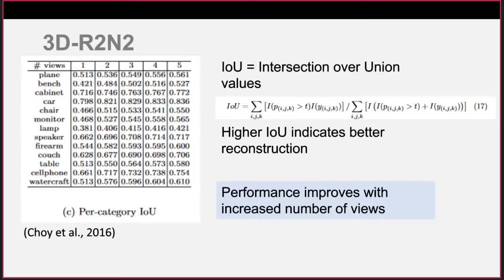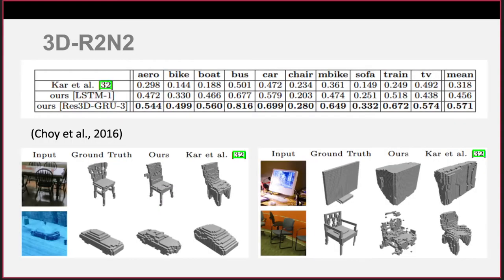For 3D-R2N2, it can be single or multi-view. We see the IOU generally improves with the number of images input — higher IOU meaning a better reconstruction — so for a user, if they can take multiple photos of the same object, they can get a better 3D reconstruction. 3D-R2N2 is compared against another solution across multiple image categories, on average performing better, though there are some edge cases such as the chair with thin legs and the computer monitor.